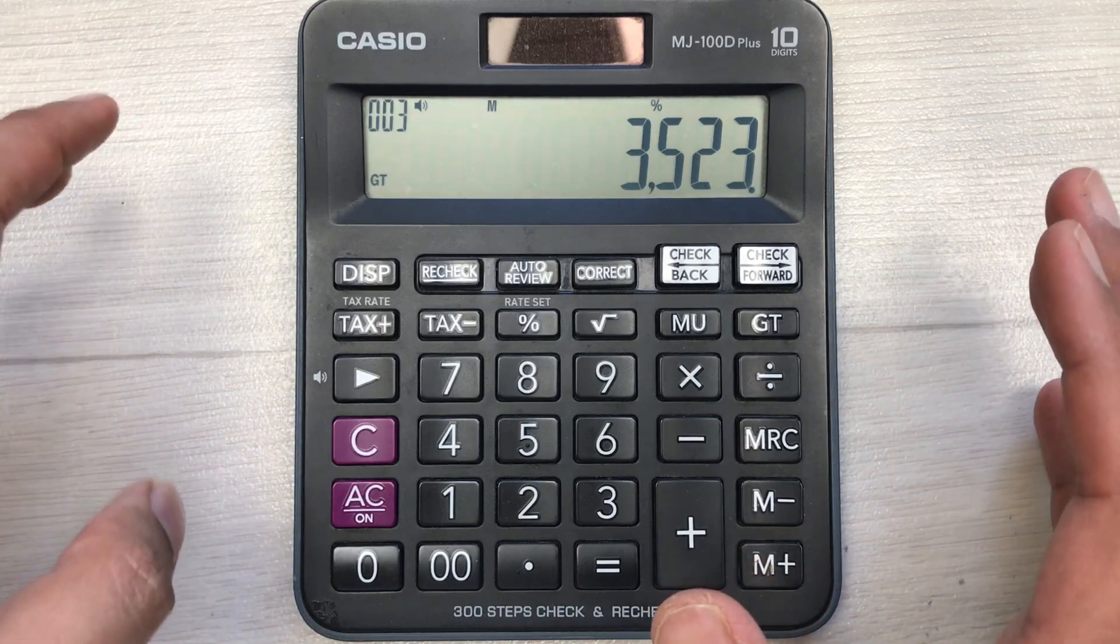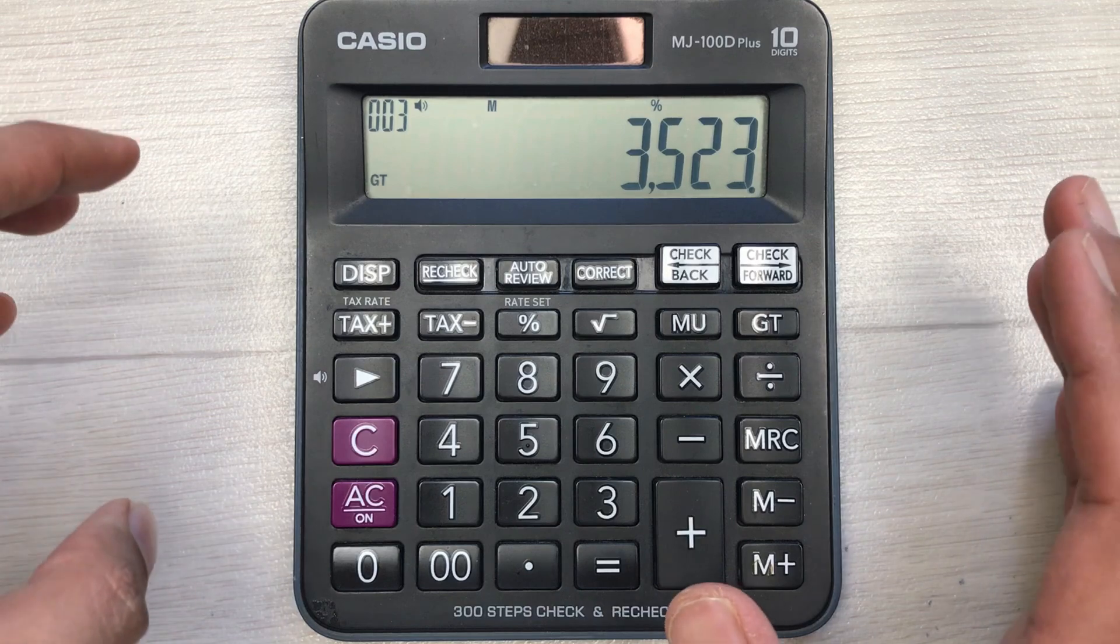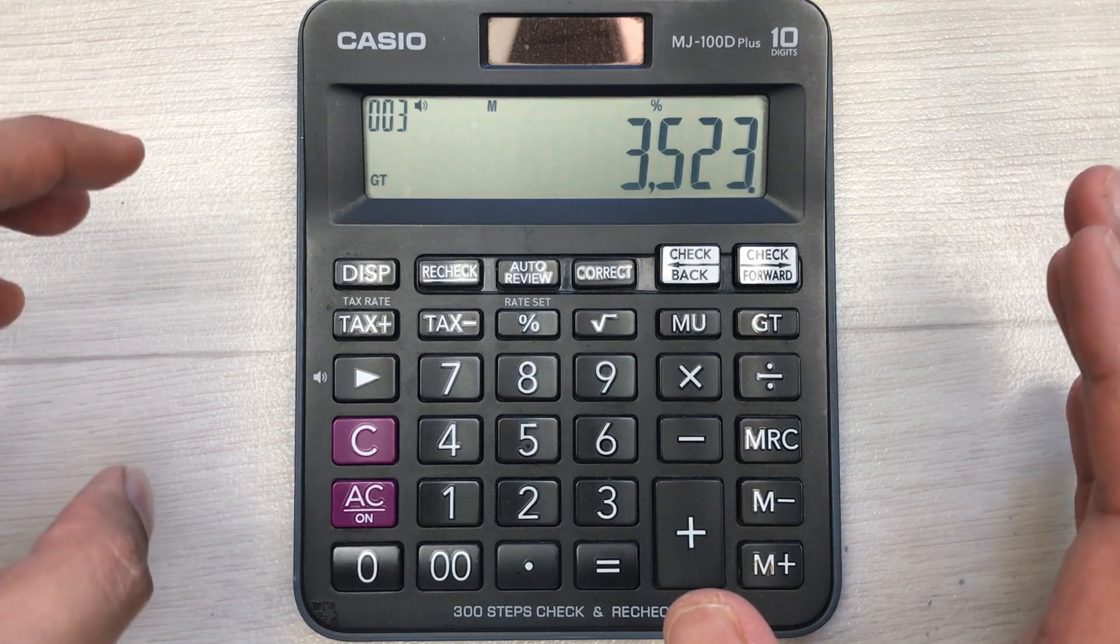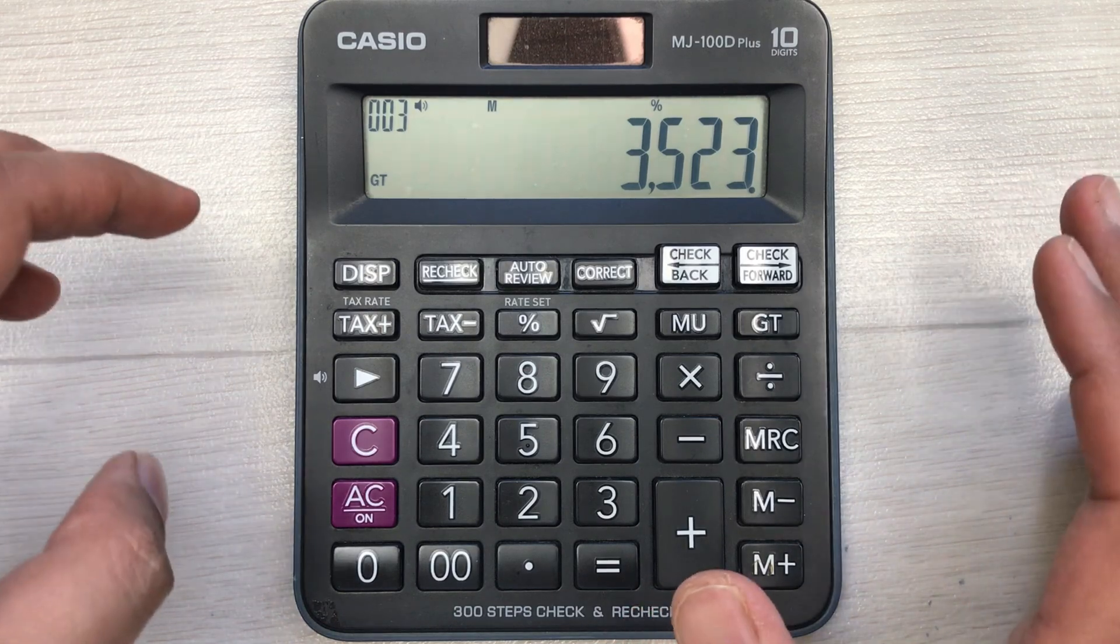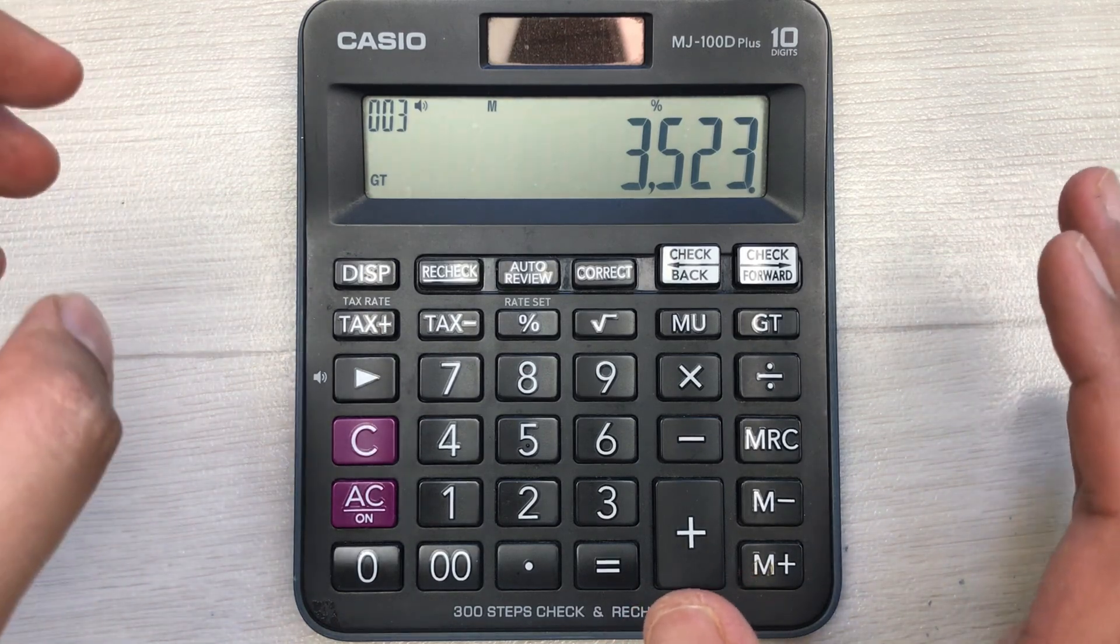65? Because the total percentage is 100 and we want 35% discount. So 100 minus 35 is equal to 65. That is why I directly multiply it with 65 to get our final answer.